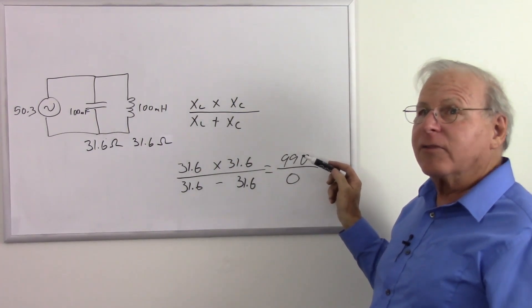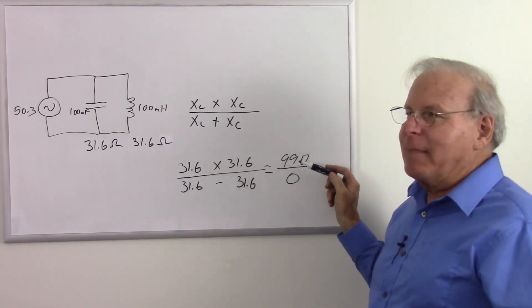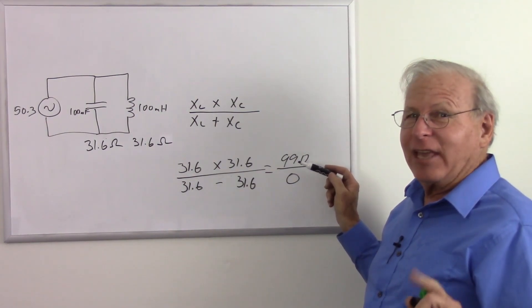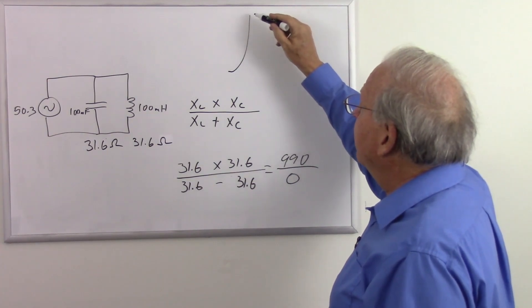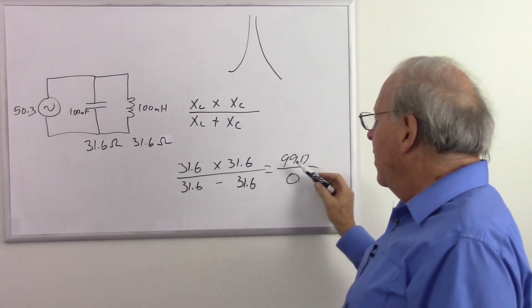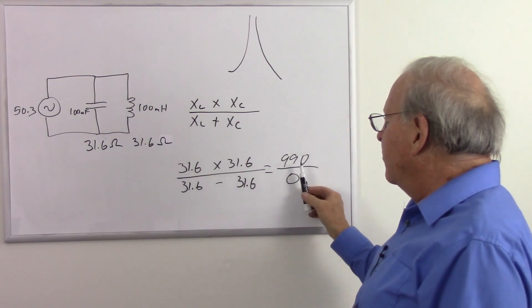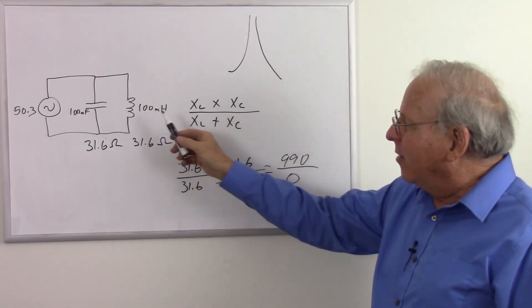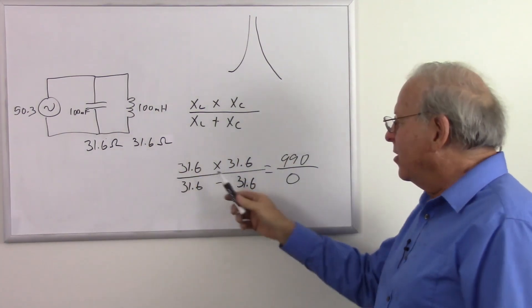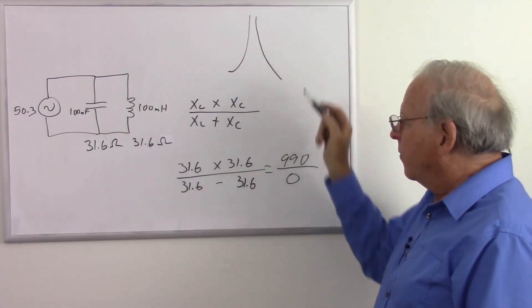Now you could argue, dividing by zero, infinity, mathematicians will say, uh-uh, you just can't do it. But obviously it approaches infinity. So basically we are seeing that at the resonant frequency we can mathematically figure it out. And not only do we get higher than either of these two reactances, but we get infinity for that.